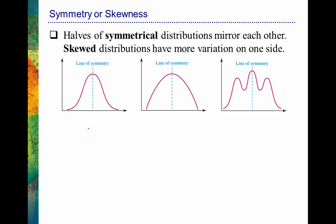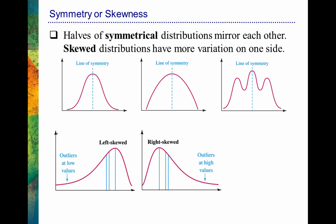Now let's look at skewed distributions. In a skewed distribution, we have more variability on one side. Some people call this left skewed — the tail is pointing toward the left. This other distribution, with the tail pointing toward the right, would be right skewed. Left skew is also known as negative skew, and right skew is also known as positive skew.